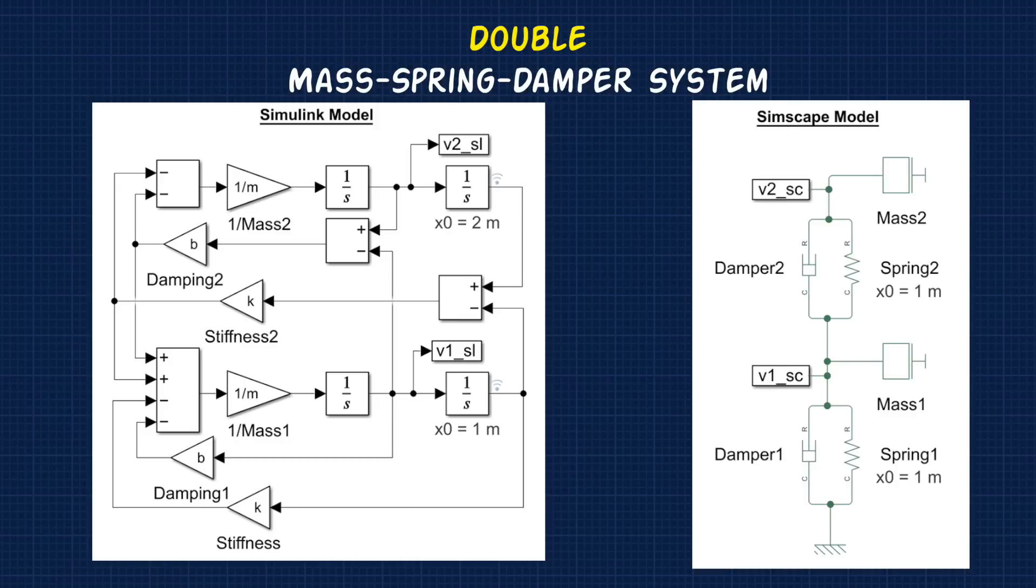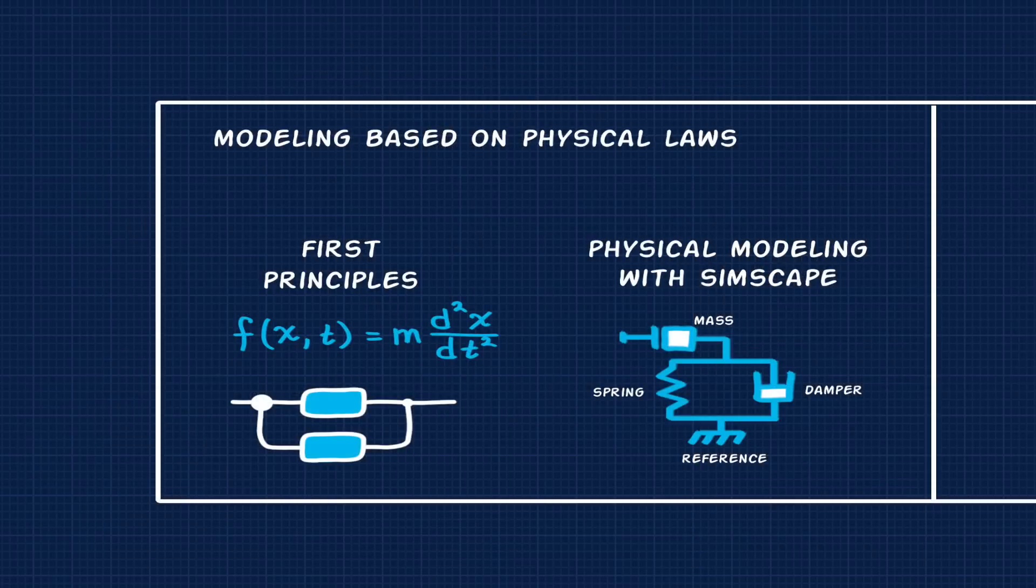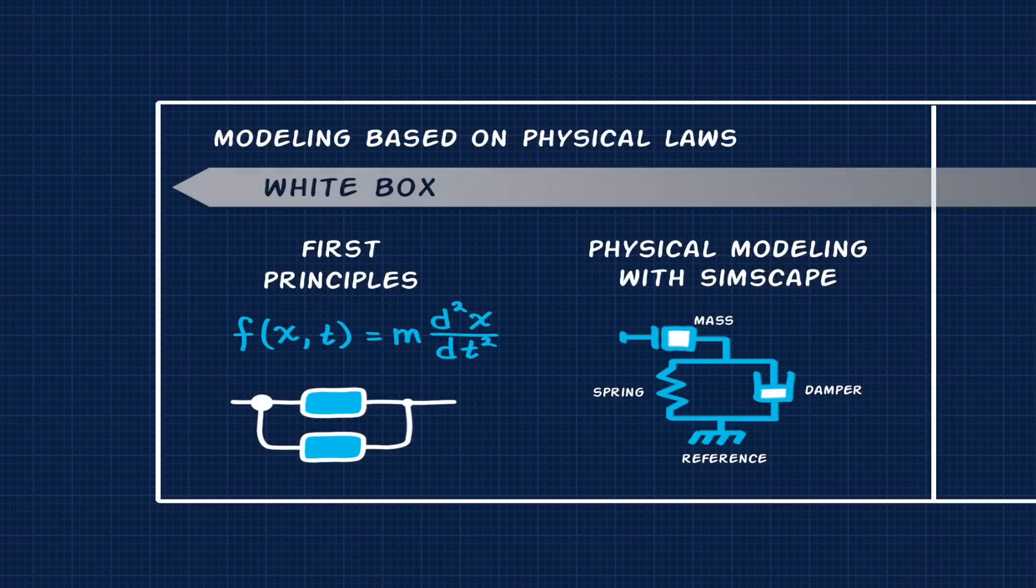But in both of these cases, we're using our knowledge of the physical laws of the system to develop a model. We have to know that we're modeling mass spring dampers, and how many there are, and what their parameters are in order to develop these models. And this type of modeling is often referred to as the white box method.